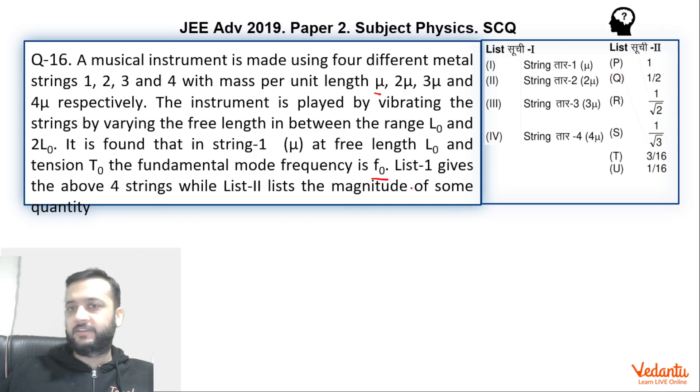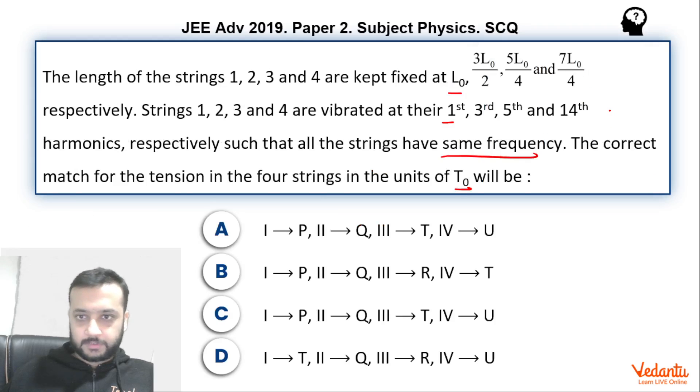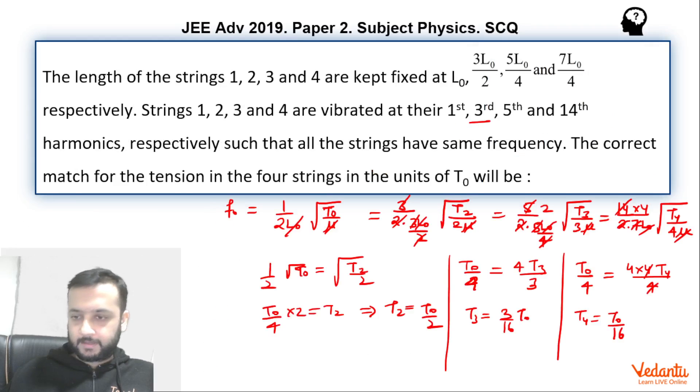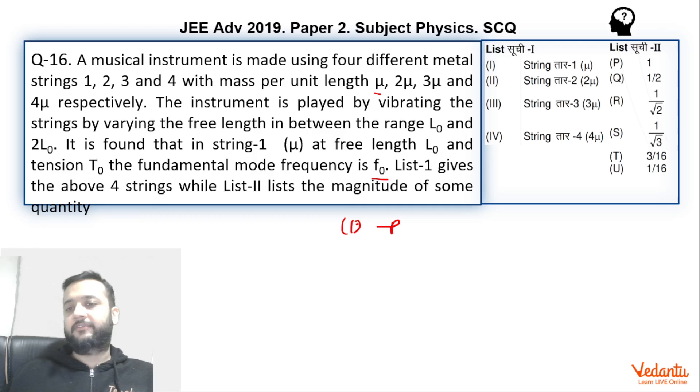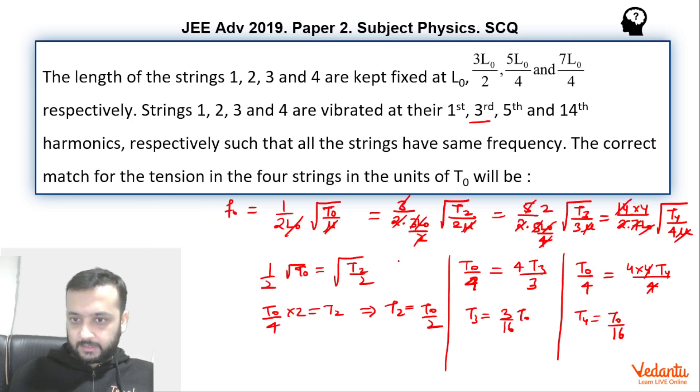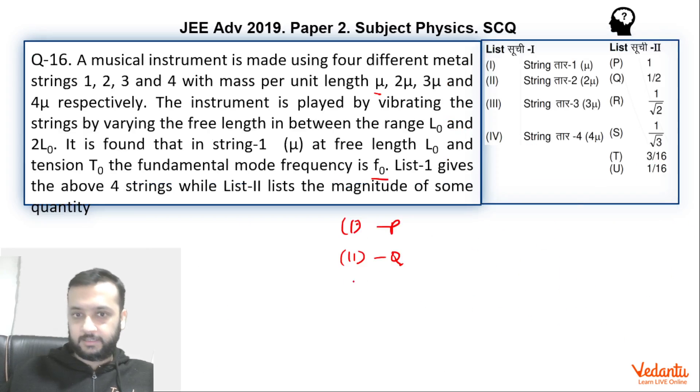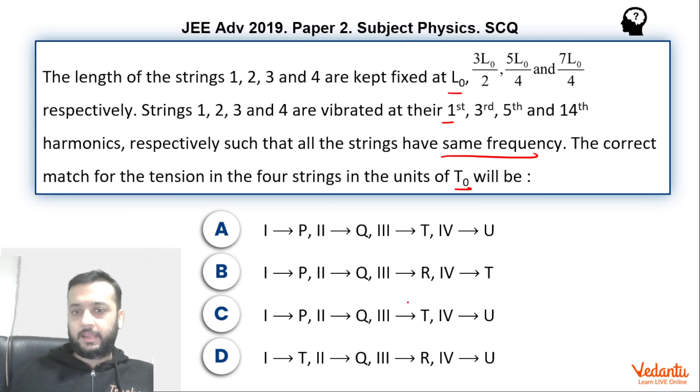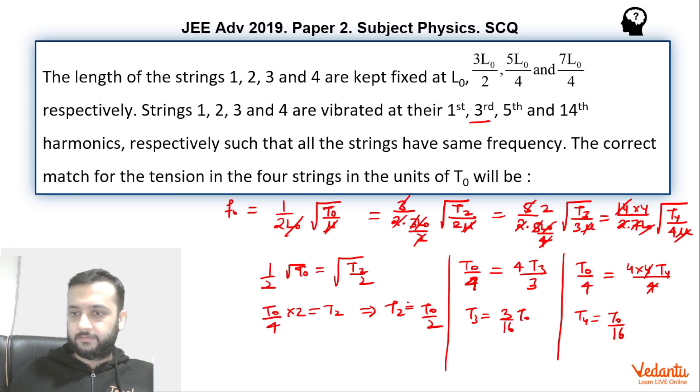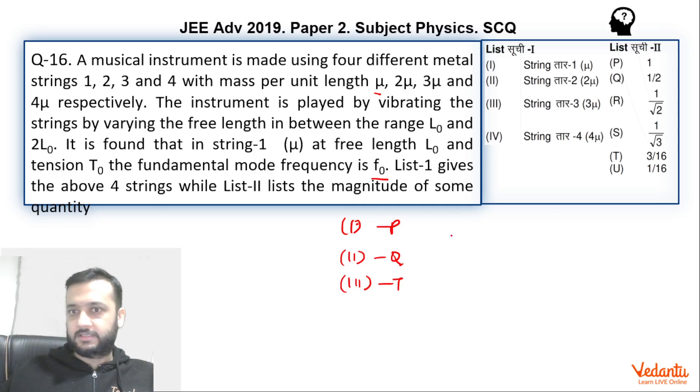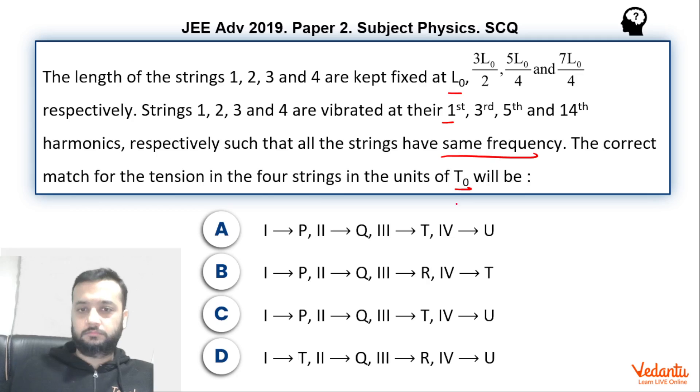First one will be P. Second will be T0 by 2, that means half, so second will be Q. Third is 3 by 16, that means T, so third will be T. And fourth will be 1 by 16, that means U. So PQTU. Option A itself is right.